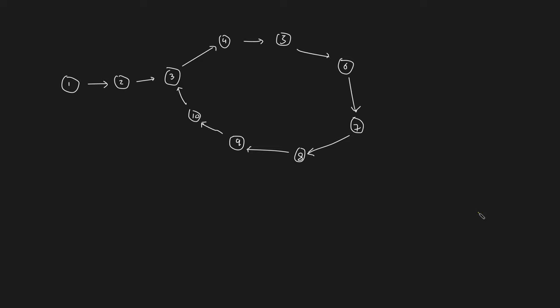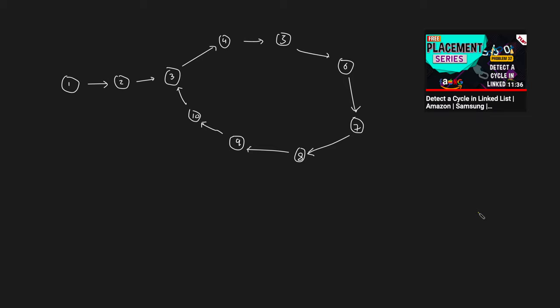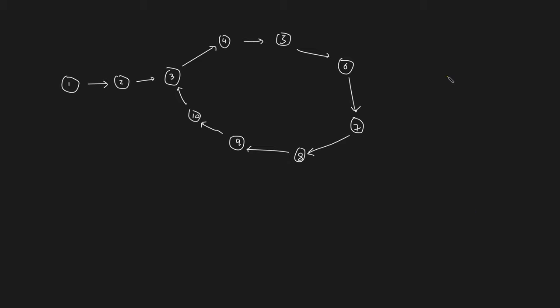We're going to use the slow and fast pointer method to detect the starting point of the cycle in the linked list. If you don't know the slow and fast pointer method, I highly recommend pausing this video and watching my previous video 'Detect a Cycle in a Given Linked List' first, because this algorithm is an extension of that one. This algorithm will be broken down into two steps.